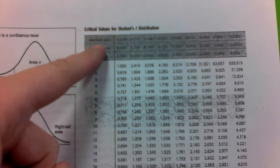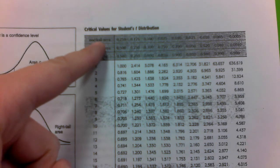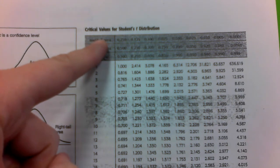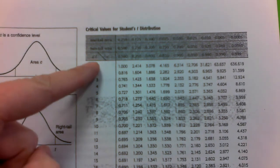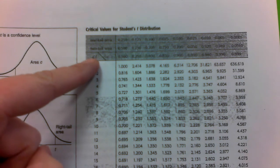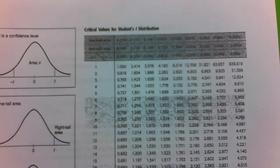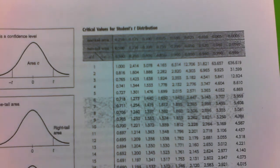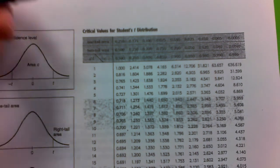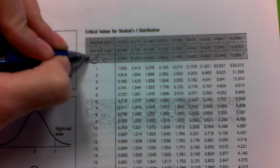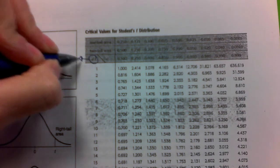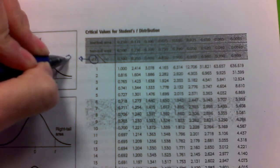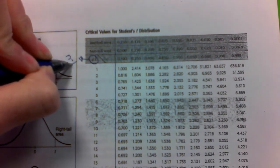We're not going to concern ourselves at this time with where it says one tail area or two tail areas. We are concerned with the DF column. The DF, or degrees of freedom, is found by taking N minus 1.